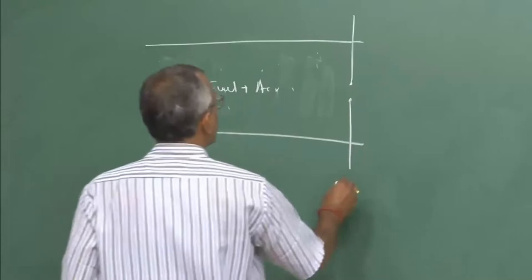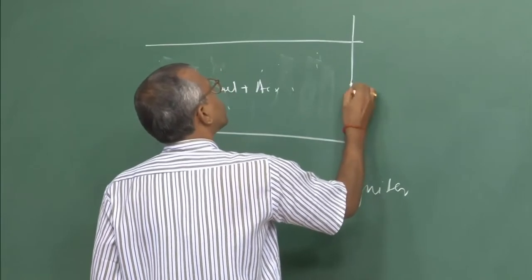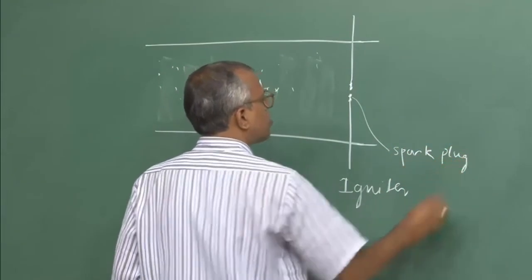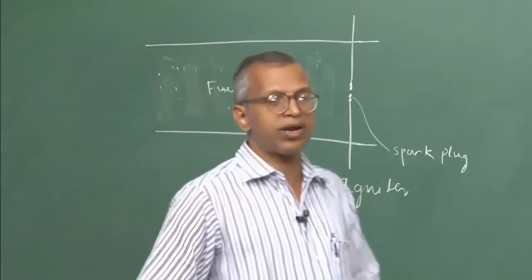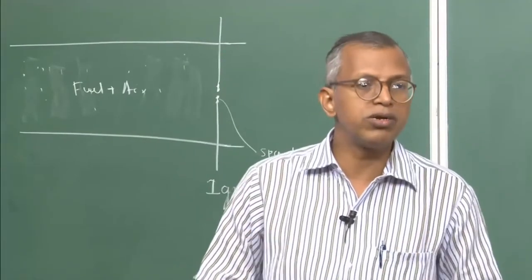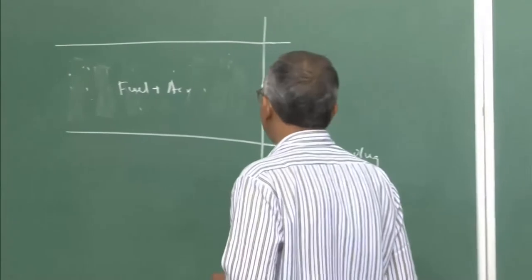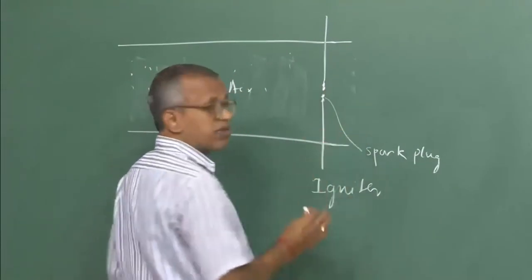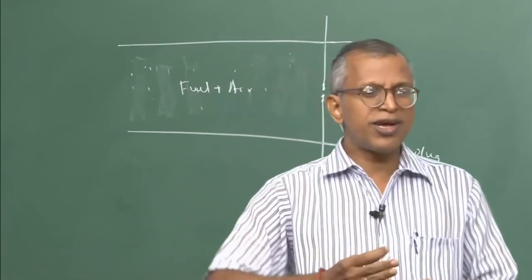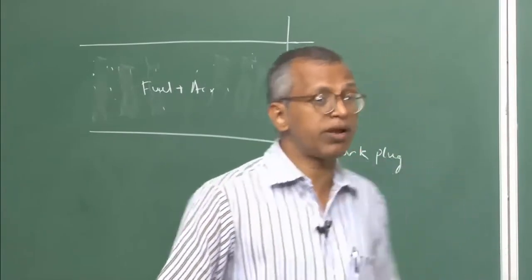If we use an igniter — for example a spark plug — what happens at the open end of the tube? There would not be any fuel-air mixture there; diffusion may bring some fuel, but it may be below the flammability limit, so nothing will happen if we ignite at that end.